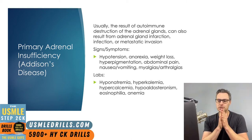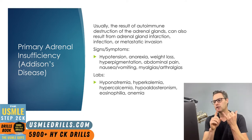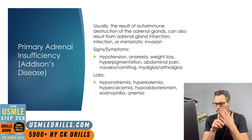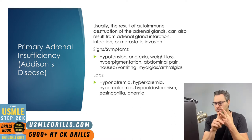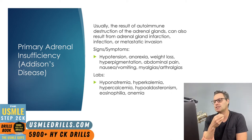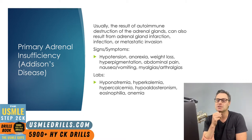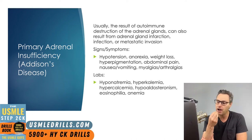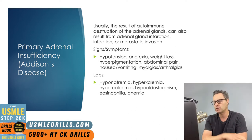Lab abnormalities you definitely want to be aware of include hyponatremia, hyperkalemia, hypercalcemia, low aldosterone, eosinophilia, and normocytic anemia. The hyperkalemia is a result of hypoaldosteronism because aldosterone causes urinary excretion of potassium. Hyponatremia occurs as a result of increased ADH released to compensate for the hypotension that arises due to lower cortisol levels.